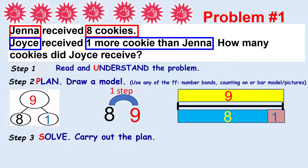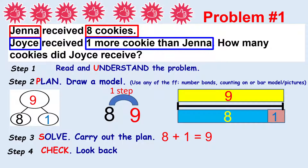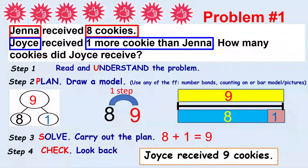Third, solve — carry out the plan. Write your addition sentence: eight plus one equals nine. Then check. Look back. Did you answer the question? Yes — Joyce received nine cookies.